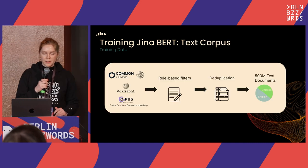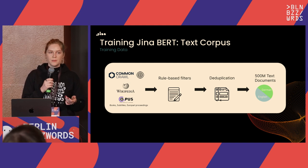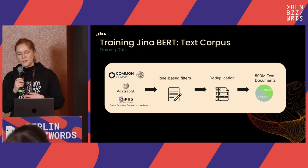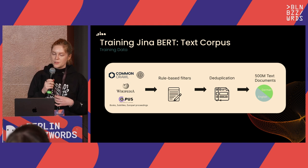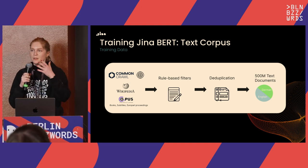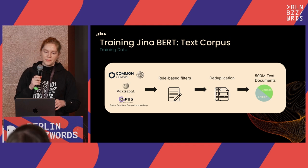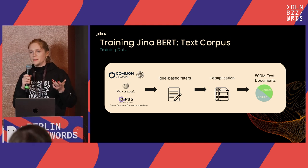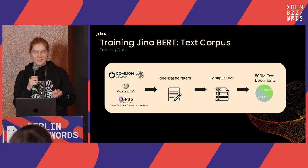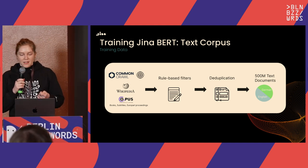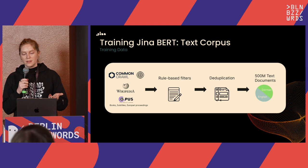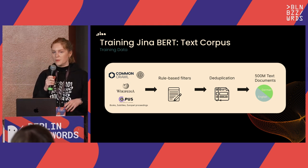For our corpus we use Common Crawl, Wikipedia, and the Europarl corpus, which contains European Parliament proceedings useful for our bilingual models. We apply rule-based filters removing nonsensical documents, those with HTML code, or duplicate words, and then apply deduplication by hashing documents to detect repetition. The result is about 400–500 million text documents, roughly half in English and half in the target language, e.g. German, for the bilingual model.